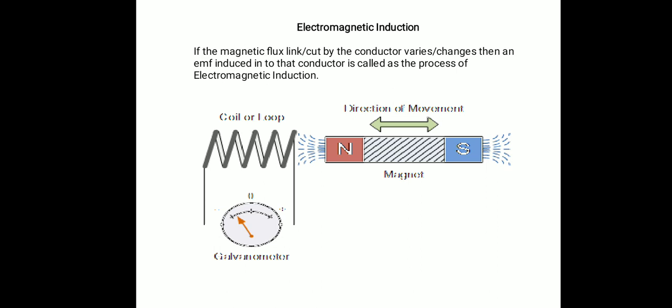Electromagnetic induction is the process where, if a magnetic flux linking to the conductor is varying in nature, due to the linking of that varying magnetic flux to the conductor, an EMF is induced into that conductor. That process is called as electromagnetic induction.